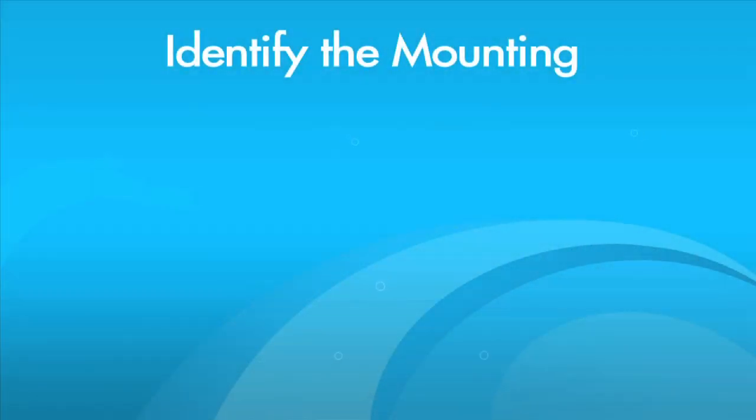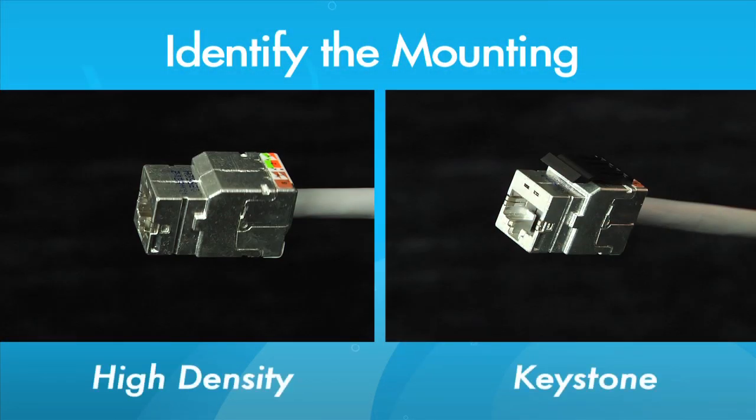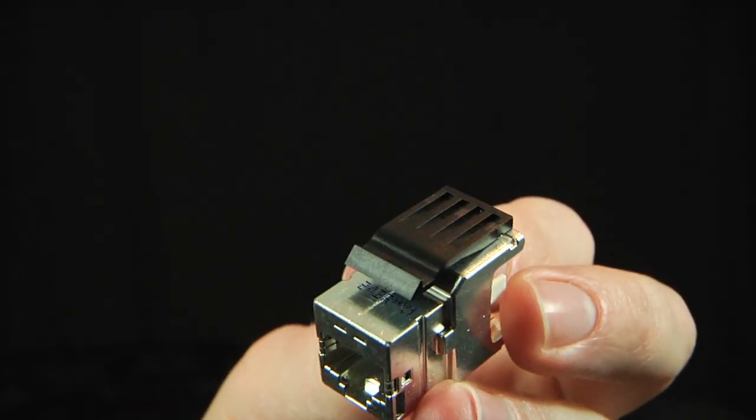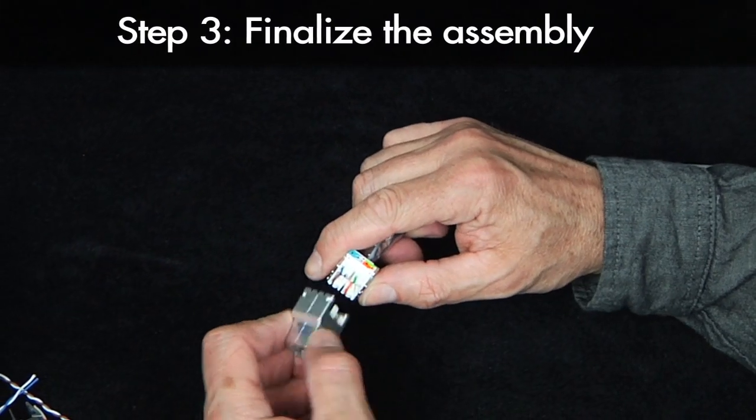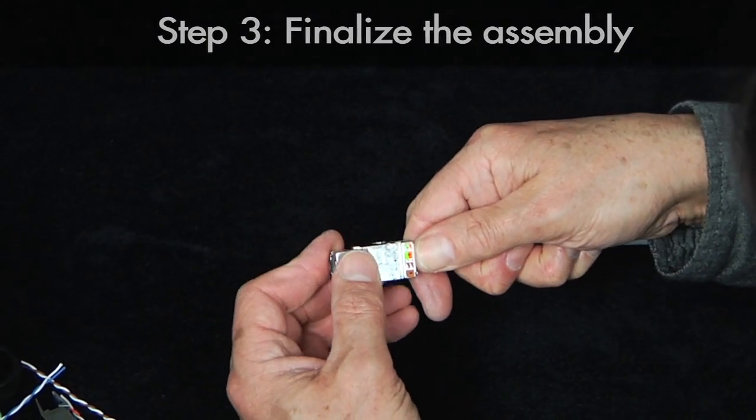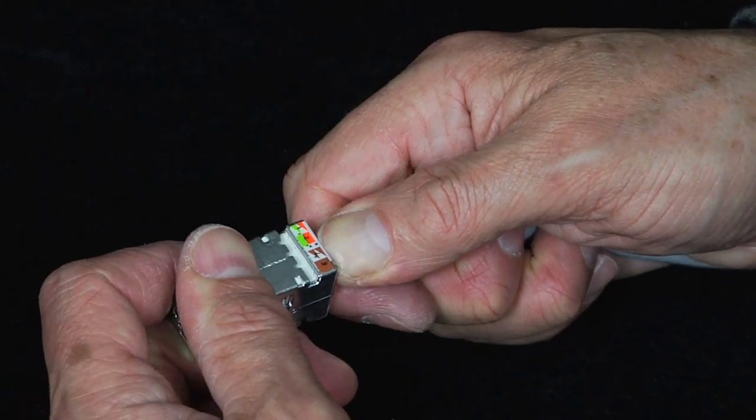Before finalizing the assembly, identify whether you intend to use a high density or keystone connection. For keystone, insert the adapter into the front housing now. Begin by inserting the termination manager into the front housing, aligning the overlapping edges. The IDCs should make contact with the conductors.